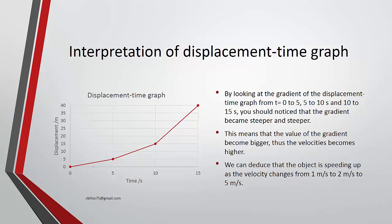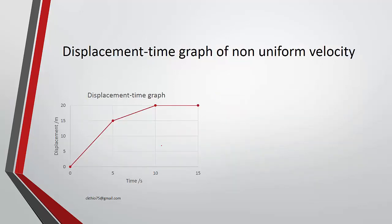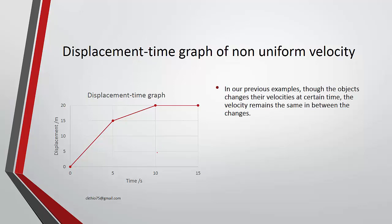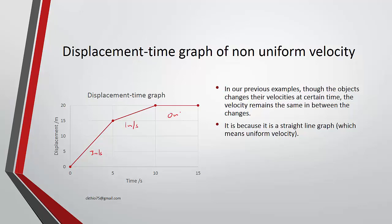The key point is that by observing how the gradient progresses, we can understand how the object is traveling. In the previous examples, the objects changed their velocity at certain times, but the velocity remained constant in between changes because each section is a straight-line graph. A straight-line displacement-time graph indicates uniform velocity — unchanged throughout — for example, 3 meters per second, 1 meter per second, or 0 meters per second.